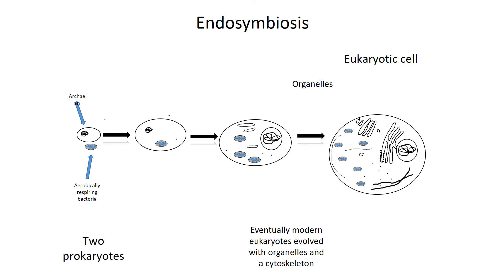Eventually we get a modern eukaryotic cell, complete with all types of organelles. Those organelles include the mitochondria for energy production, the Golgi apparatus, which is part of the endomembrane system, same with the endoplasmic reticulum, and the cell nucleus. These organelles compartmentalize the functionings of the cell. Another important evolutionary feature is the cytoskeleton, which can help give it shape, help it move around, and engulf other large bacteria.